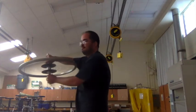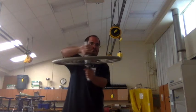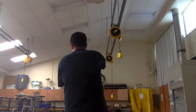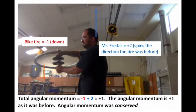And then what happened to Mr. Freitas? Well, he started spinning in the direction that the bike tire was originally rotating. It had a plus momentum. And now that plus momentum was transferred to Mr. Freitas. The bike tire flipped over. It has a negative one momentum. But now Mr. Freitas is spinning at a positive angular momentum.